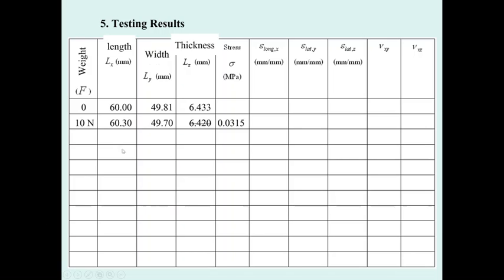The stress is computed as the weight — for example, 10 Newtons — divided by the area (width times thickness). For the elongation, for example, 60.3 minus 60, divided by 60, gives the longitudinal strain value. For the lateral strain, take the new width minus the original width (which will be negative due to contraction), then divide by the original width, for example 49.81, to get the lateral strain. Dividing the lateral strain by the longitudinal strain in the Poisson ratio equation gives you the result — for example, 0.44.